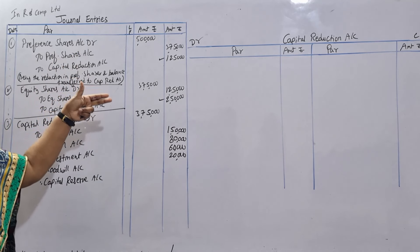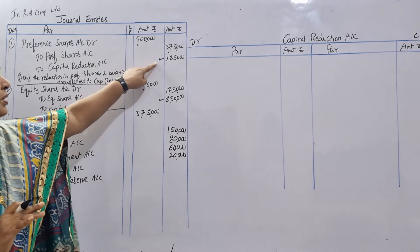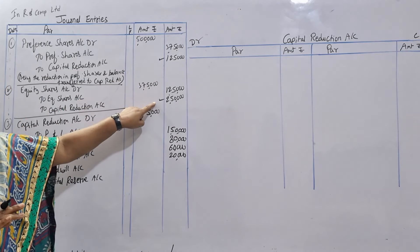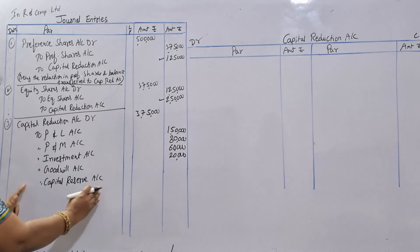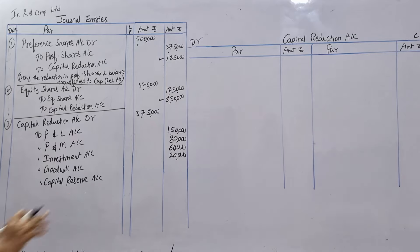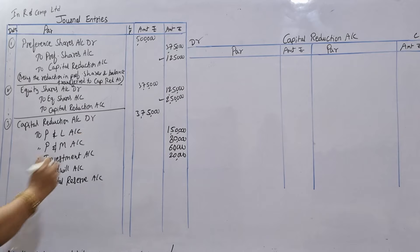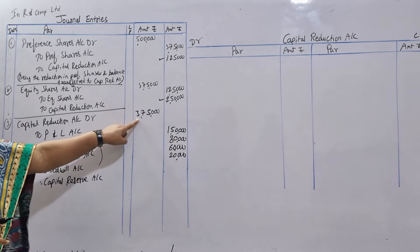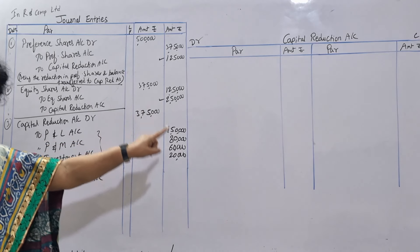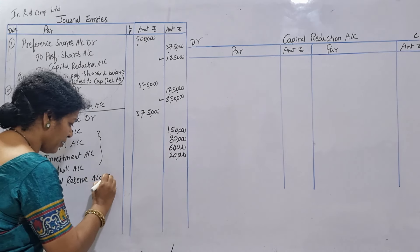From the previous entries, wherever you found capital reduction — ₹1,25,000 and ₹2,50,000 — that total of ₹3,75,000 is being used to write off profit and loss account, plant and machinery, investment, and goodwill. After writing off, whatever amount remains will be transferred to the capital reserve account. So this is the balancing figure.